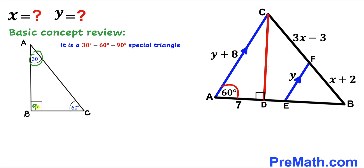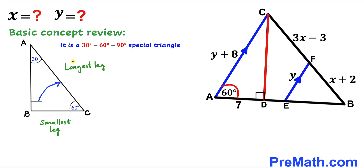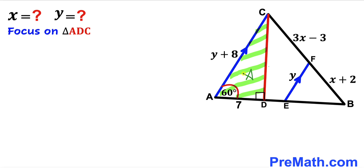In a 30-60-90 special triangle, 30 degrees is the smallest angle and 90 degrees is the largest angle. The side opposite the smallest angle is the smallest leg, and the side opposite the largest angle is the longest leg. The longest leg is twice the smallest leg. If the smallest leg is 'a' units, the longest leg is 2a and the third leg is a times the square root of 3.